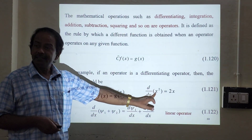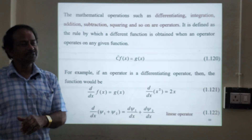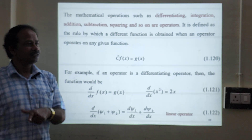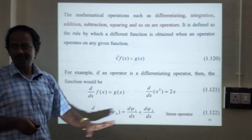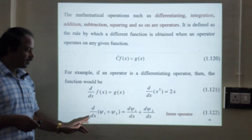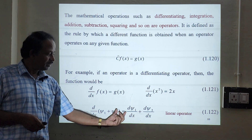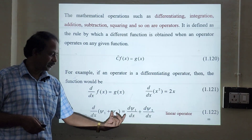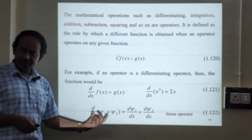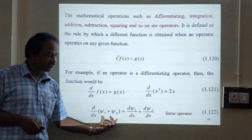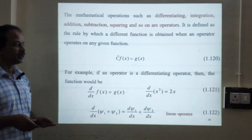Suppose it is d/dx operating on e^(2x). What will be the answer? 2 times e^(2x). So 2 is the eigenvalue and e^(2x) is the eigenfunction. That's the difference. Now the condition for the linear operator: d/dx of (psi1 + psi2) equals d(psi1)/dx plus d(psi2)/dx. Operator operating on the combined system gives the sum of operating on the individual system. This is the definition for linear operator in mathematics.